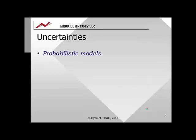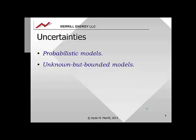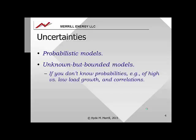There are two models of uncertainty. The first is familiar to all engineers: probabilistic models. There is also a complementary model — a class of models known as unknown but bounded models. Unknown but bounded models assume that an uncertainty has limits, but we don't have or use a probability distribution function within those limits. These models are useful if you don't know the probabilities.